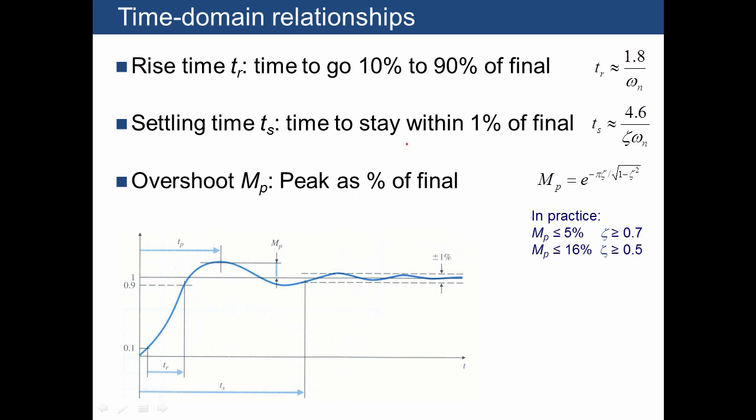Here are some typical time domain specifications. One of them is the rise time. It's the time for this signal to rise from 10 to 90 percent of its final value. And the formula for that is given by an approximation, 1.8 over omega n.